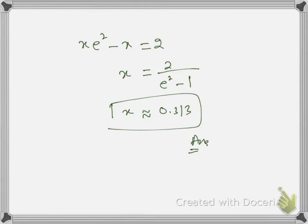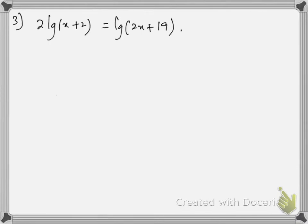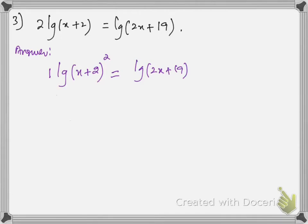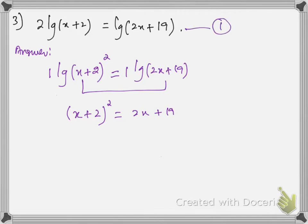Let's do one more example of logarithmic equations. The question is: 2·lg(x + 2) = lg(2x + 19). We have to use the power law on the left side to make the coefficient of the log equal to 1, giving lg(x + 2)² = lg(2x + 19). Now since we have the same coefficients 1 on both sides, we can equate their functions: (x + 2)² = 2x + 19. This is equation number 1. Expanding gives x² + 2x − 15 = 0.